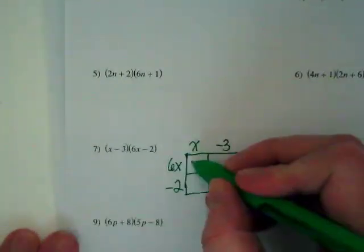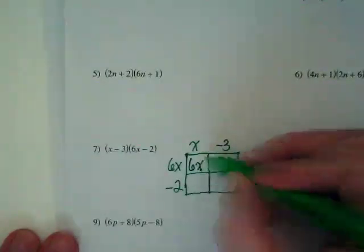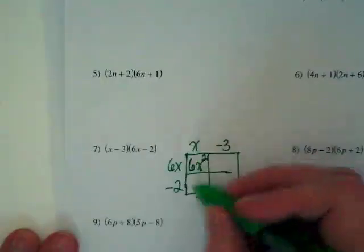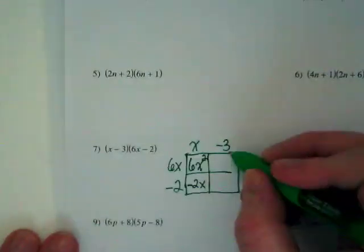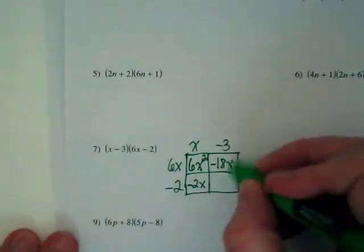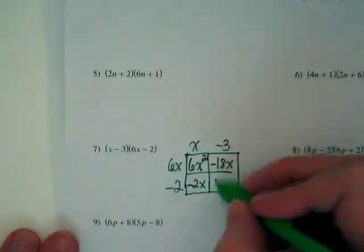What's going to happen up here? We've got 6X times X. So the 6 stays the same, but what happens to the X? It's going to become squared. Negative 2 times X is just going to be negative 2X. Negative 3 times 6X is going to be negative 18X. And then negative 3 times negative 2 is positive 6.